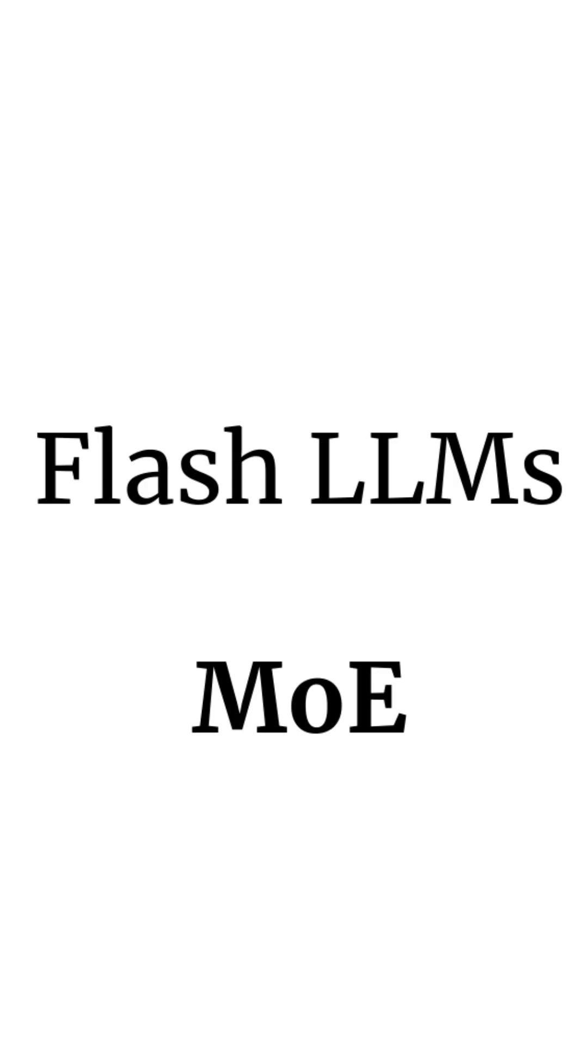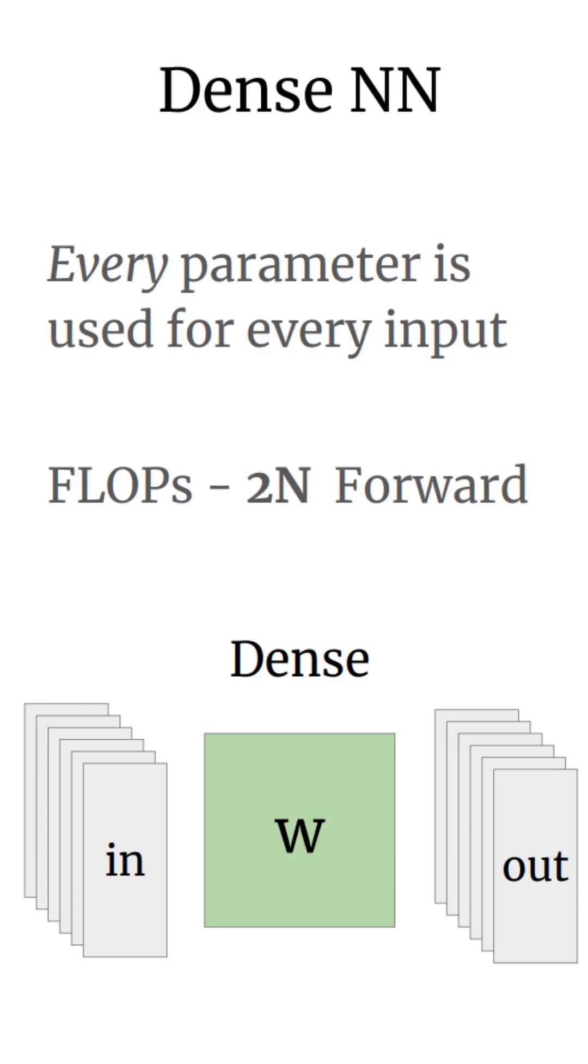Let's talk about mixture of expert models. In a standard dense neural network, every parameter is used for every input. This yields a total of 2 times N floating-point operations on the forward path of the model. This is because every parameter of the neural network is involved in one multiplication and one addition for every input.